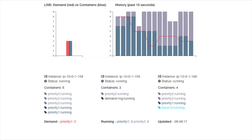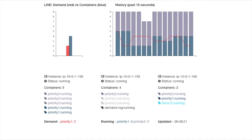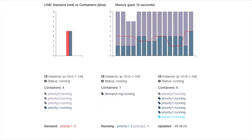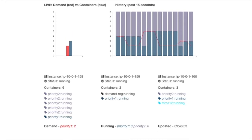In this more detailed view of the same demo, the bottom half of the screen shows which containers are running on each of the three Mesos agent machines. On this occasion, Marathon placed the random number generator on the machine in the middle, and the Force12 agent on the right-hand side machine. Priority1 and Priority2 containers are distributed across all three agent machines.